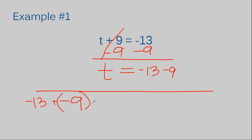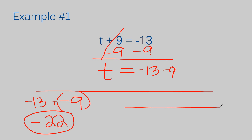Now I need to remember the rules for adding integers: when the signs are the same you add like normal and keep the sign the same. So 13 plus 9 is 22 and the sign remains negative, so the answer is negative 22. Now I'll verify that using the number line method. I'll draw a number line and start at negative 13.